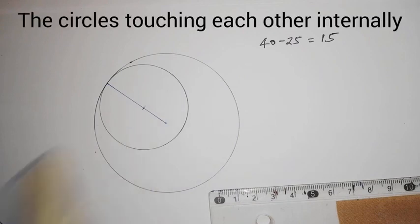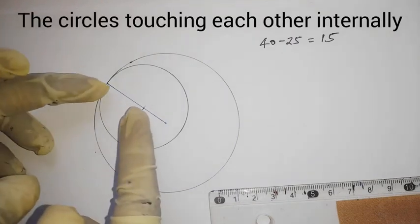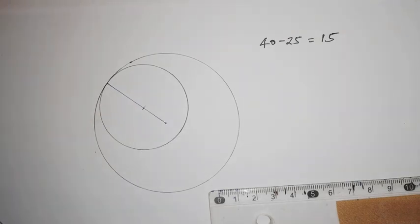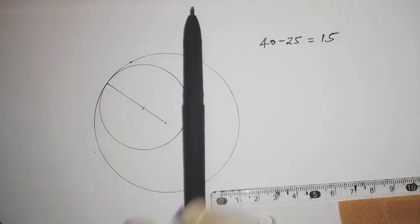So this circle here of radius 25 is touching internally with another circle of radius 40. Thank you very much for watching, consider subscribing. Enjoy!